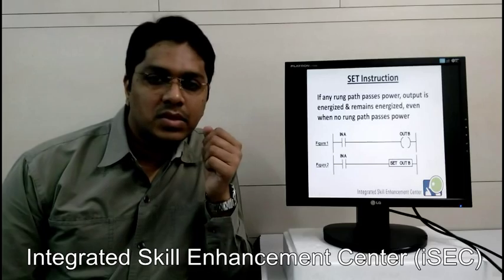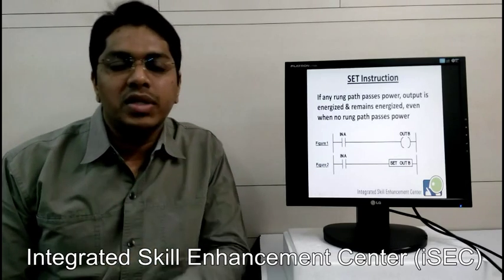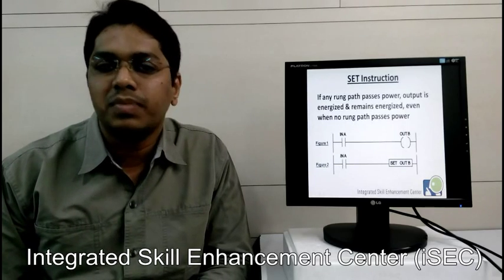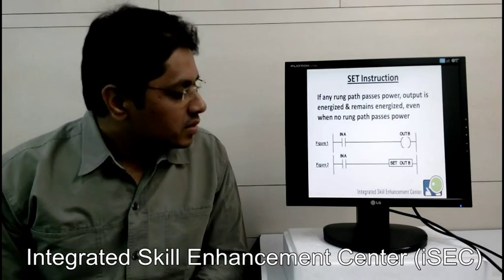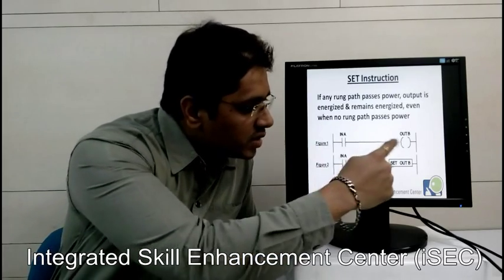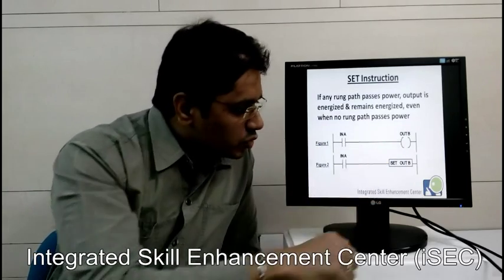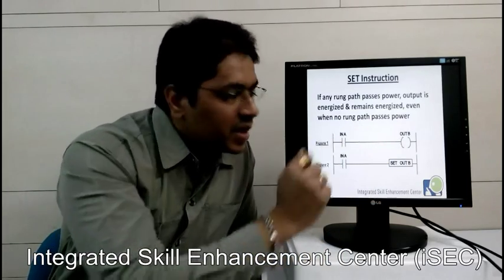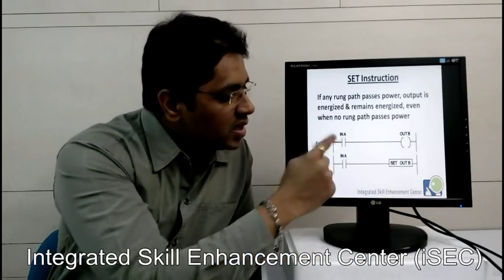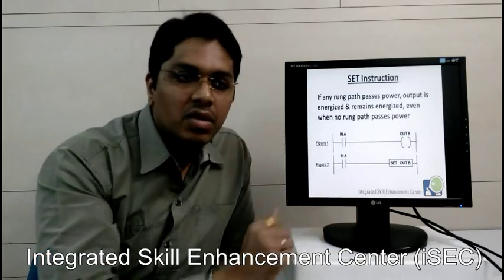Now what is set instruction? Set is: if any rung path passes power, the output is energized and remains energized even when no rung path passes power. In figure 1, there is a normal contact, normal input, and it is an output — a normal output. So once you press the button, the output B will be turned on. Once we release the button, the output will be de-energized, means it will be off.